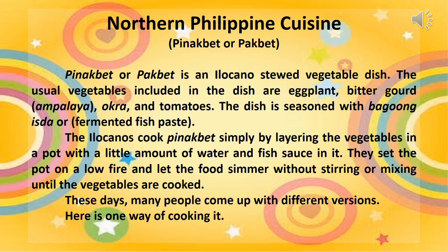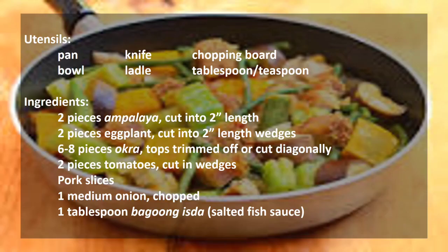The Ilocanos cook pinakbet simply by layering the vegetables in a pot with a little amount of water and fish sauce in it. They set the pot on a low fire and let the food simmer without stirring or mixing until the vegetables are cooked. These days many people come up with different versions. Here is one way of cooking it. The utensils are pan, bowl, knife, ladle, chopping board, and tablespoon or teaspoon.